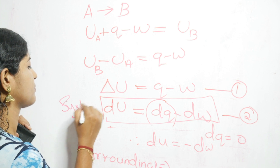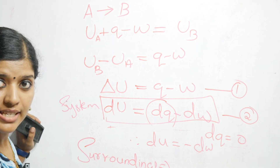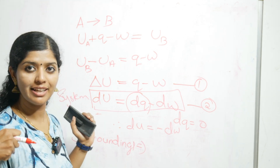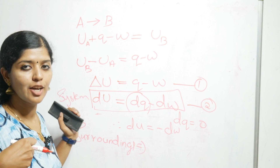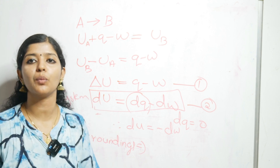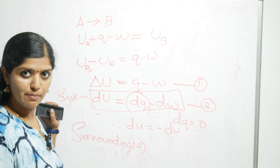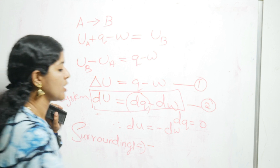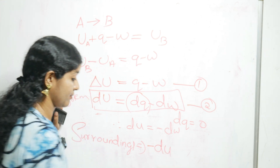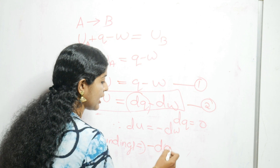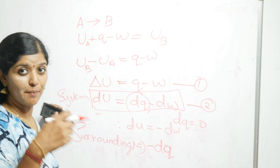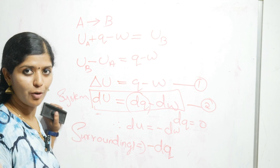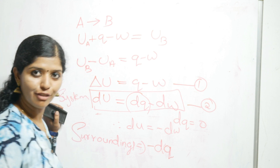When we consider the surroundings: our system absorbed Q amount of energy from the surroundings, so the surroundings released Q amount of energy. Whatever is released will have a negative sign. So for the surroundings, it is minus dQ. Since the system absorbed Q amount of heat energy from the surroundings, the surroundings have lost Q amount of heat energy — therefore it is minus dQ.